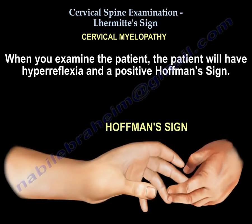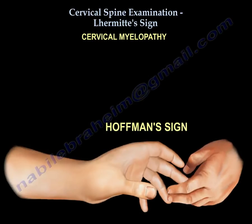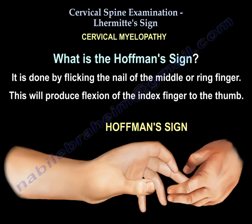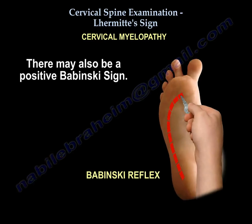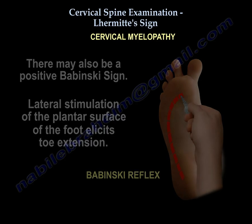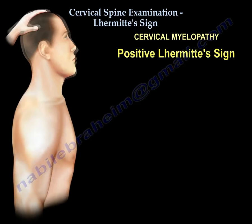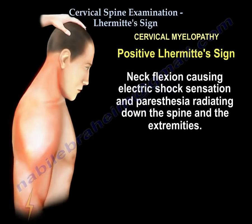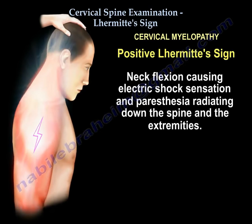When you examine the patient, the patient will have hyperreflexia and a positive Hoffman's sign. Hoffman's sign is done by flicking the nail of the middle or ring finger, which will produce flexion of the index finger to the thumb. There may also be a positive Babinski sign — lateral stimulation of the plantar surface of the foot will elicit toe extension. A positive Lhermitte's sign presents as neck flexion causing electric shock sensation and paresthesia radiating down the spine and extremities.